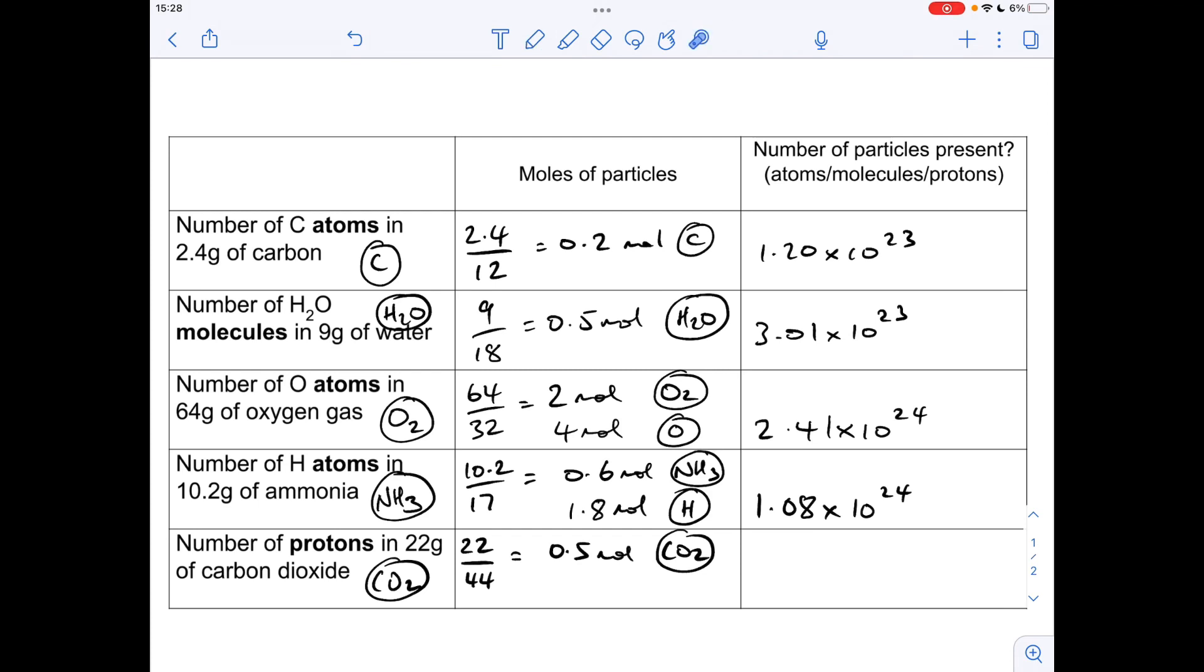Right, how many protons have we got in there? So think about how many protons we've got in a single CO2 molecule. So we'd have six in the carbon and eight in each of those oxygens. So there's a total of 22 protons. So put that there, 22 Ps in a carbon dioxide molecule.